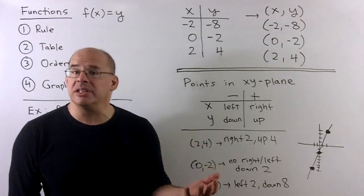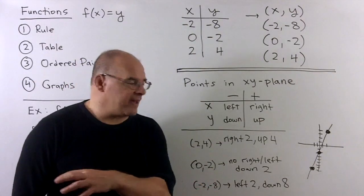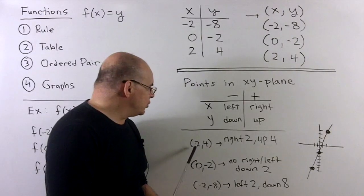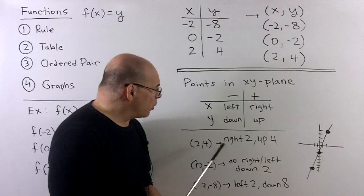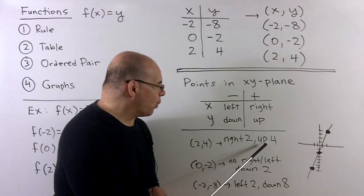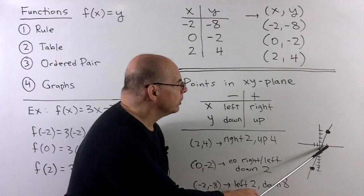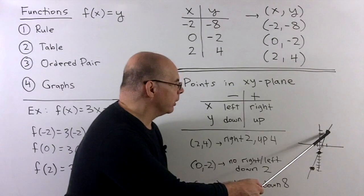With the points we've just found, if I take 2 comma 4, so that's going to be our x and y, then we're going to go right 2 and up 4. We start at the origin, go over 2, go up 4 for this point here.